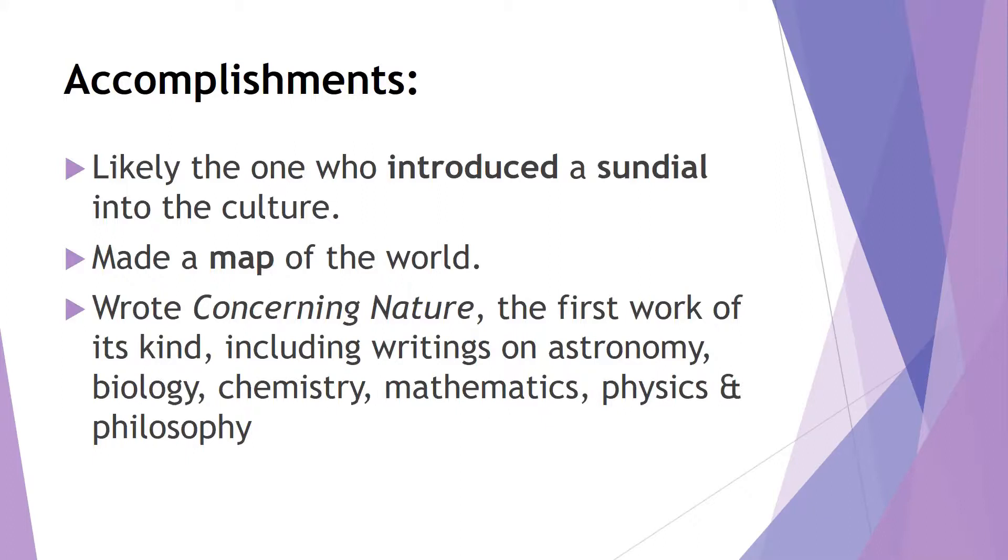And he wrote a book called Concerning Nature. Now, we just have fragments of that, and even the fragments are kind of reports from other authors about what Anaximander had to say. But the book itself was the first work of its kind because it included writings on astronomy, biology, chemistry, mathematics, physics, and, of course, philosophy. Anaximander showed that pre-Socratic desire to understand the world around him, and so he investigated everything. He wanted to understand and be able to explain everything that he could.